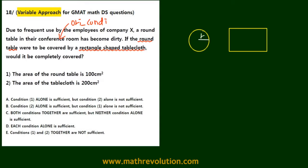What we need to know is r for the round tablecloth, one variable, and we need ab for the rectangular, we need two variables here.